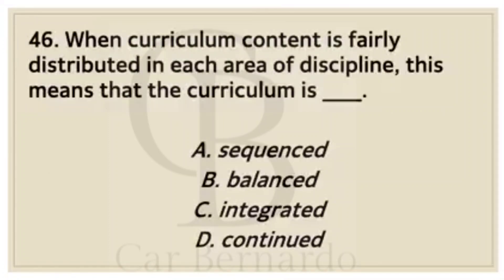Number forty-six: When curriculum content is fairly distributed in each area of discipline, this means that the curriculum is blank. Letter A: Sequence. Letter B: Balance. Letter C: Integrated. Letter D: Continued. Answer: Letter B, Balance.